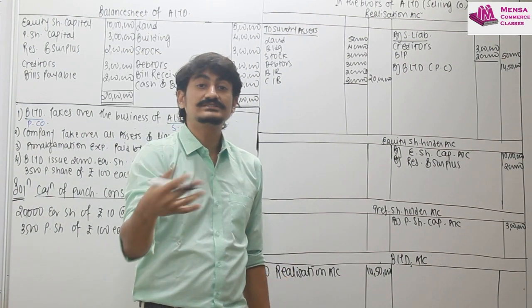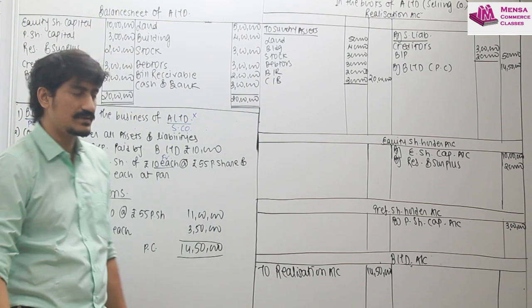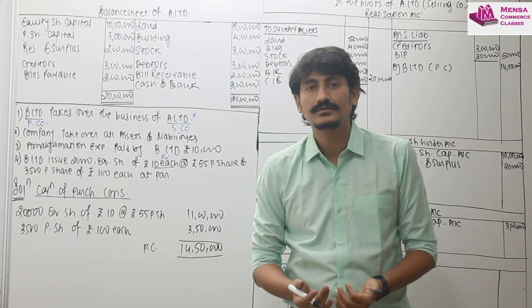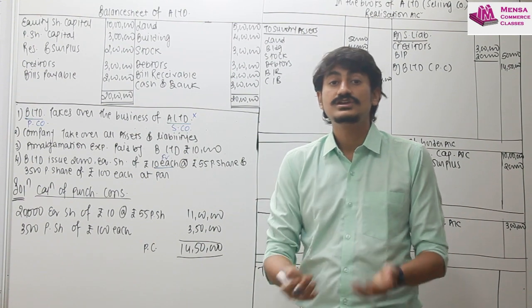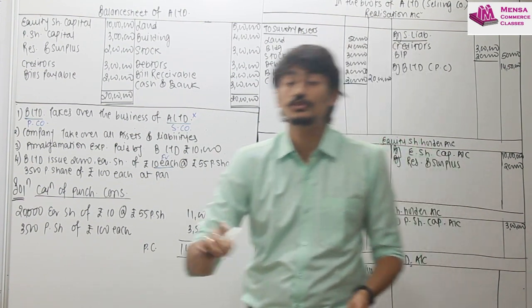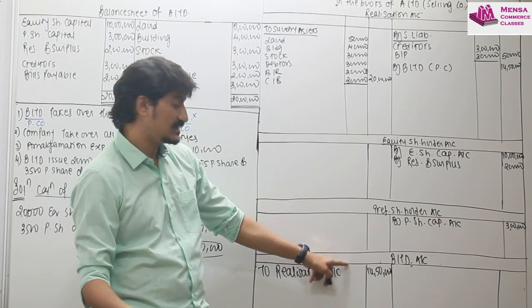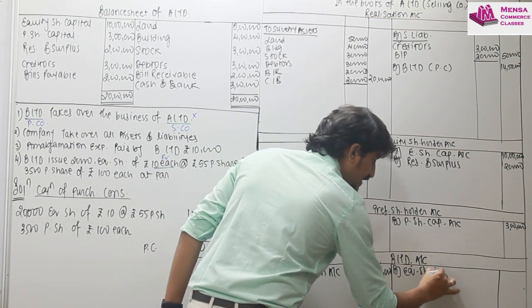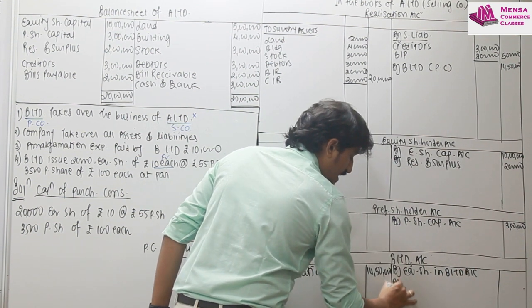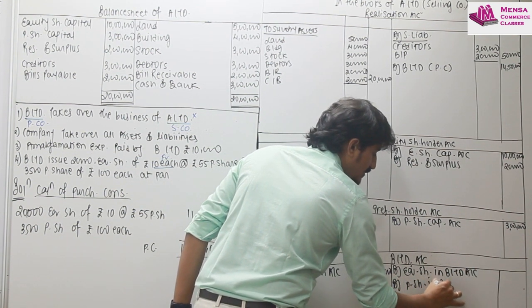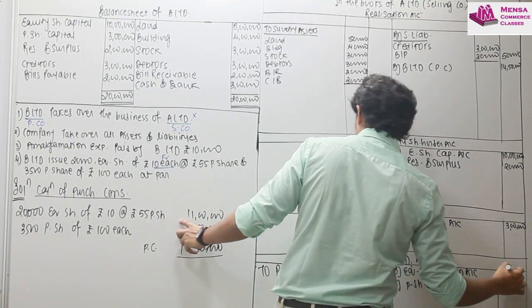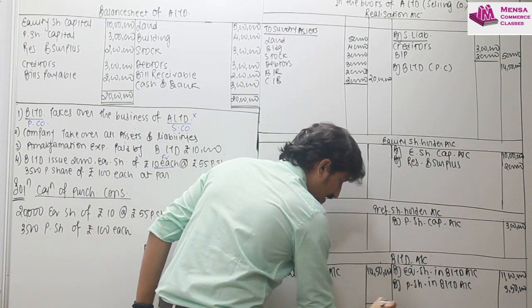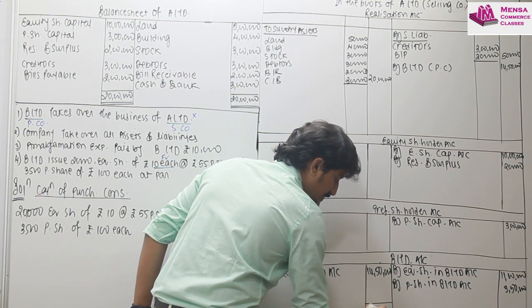But from them, purchase consideration will be received. What will we receive? Equity shares and preference shares. So equity shares and preference shares are coming in. Then what will happen? Equity shares in B limited account debit, preference shares in B limited account debit to, who is the giver? B limited. So what will happen? By equity shares in B limited account, by preference shares in B limited account. How much were the equity shares? 11 lakh. Preference shares: 3 lakh 50. And then you can see that the purchasing company account is closed.